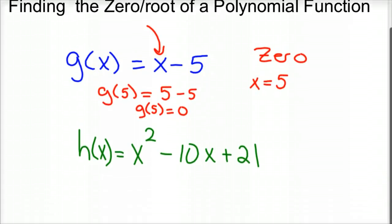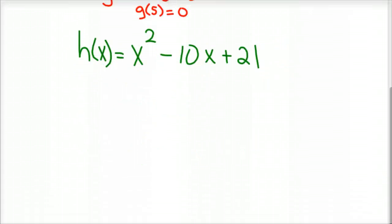We've got h(x) = x² - 10x + 21. What would make this function 0? Well, you could guess and check. We could start throwing numbers in, finding out what it would be. You could try a whole bunch of different things, and eventually you'd probably figure it out. But I know that this factors.